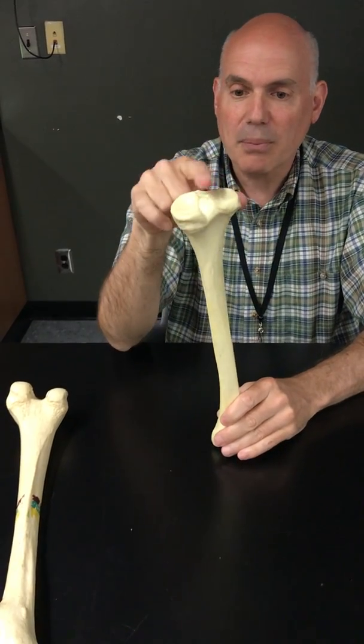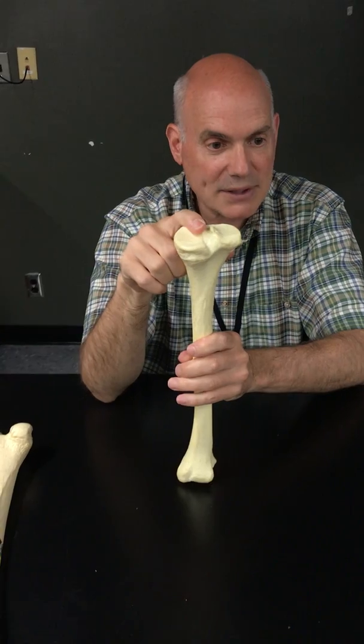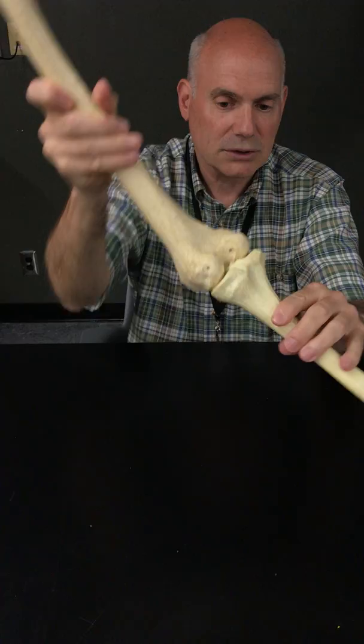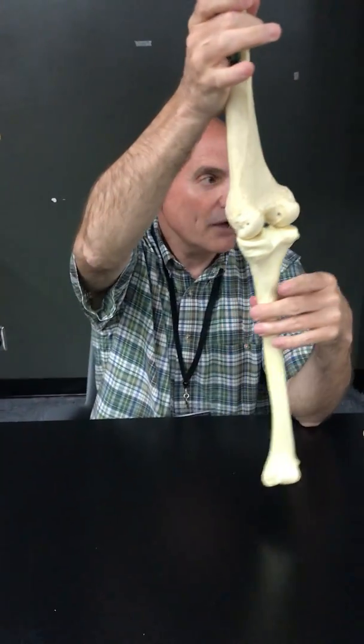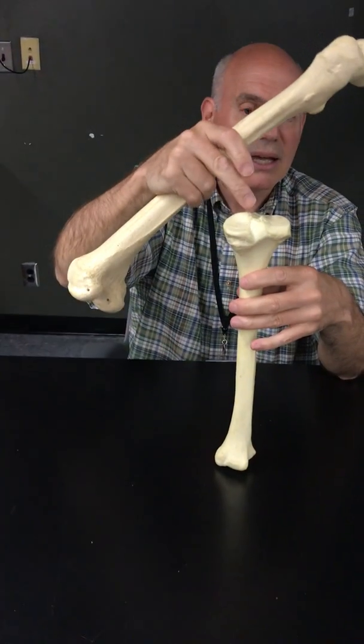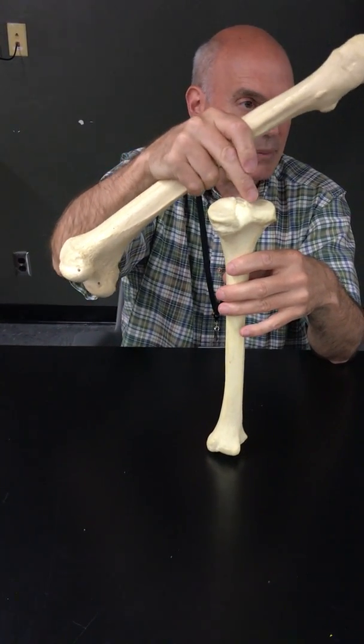These bumps, the eminence, fit into the depression. Coming off of those two bumps are two intracapsular ligaments - the anterior and posterior cruciate ligaments of the knee, ACL and PCL. They come off of these two bumps and attach to the floor of the fossa, locking the knee in place.